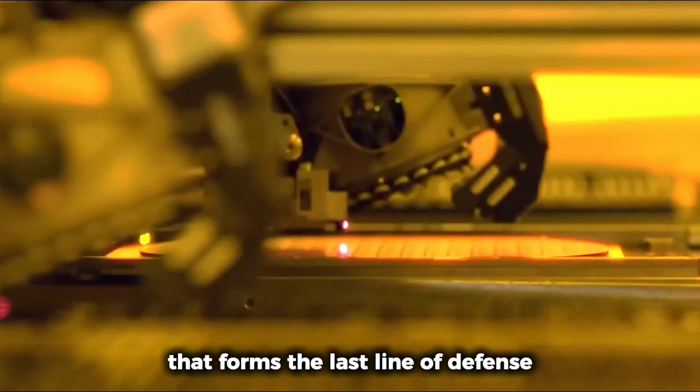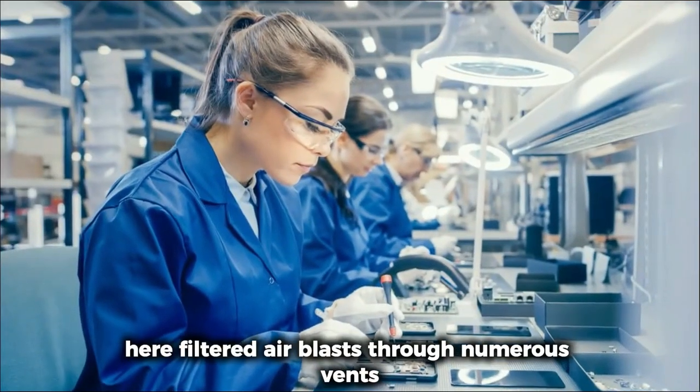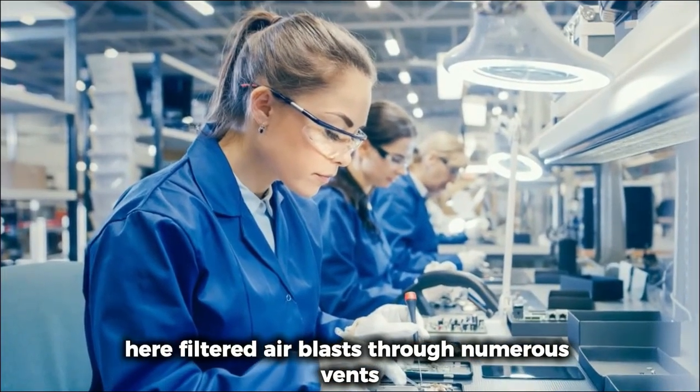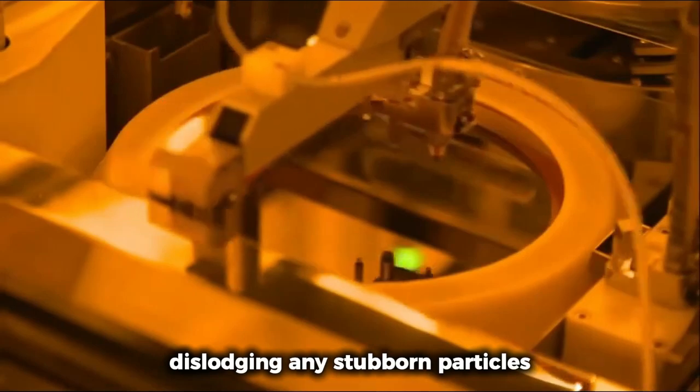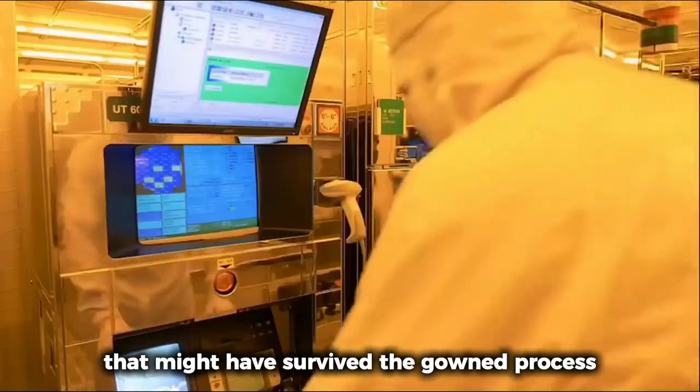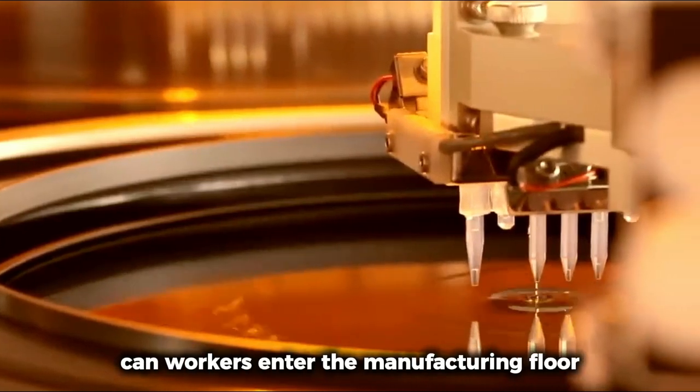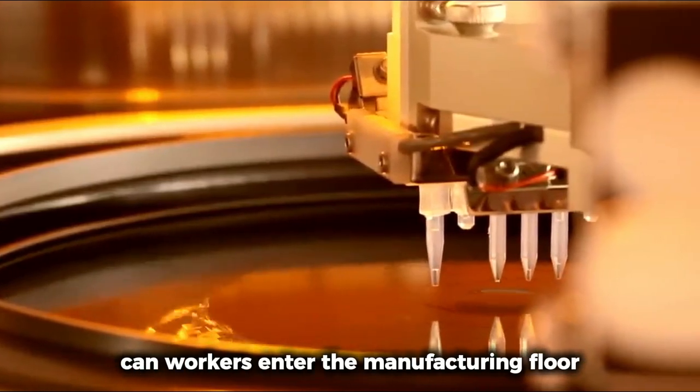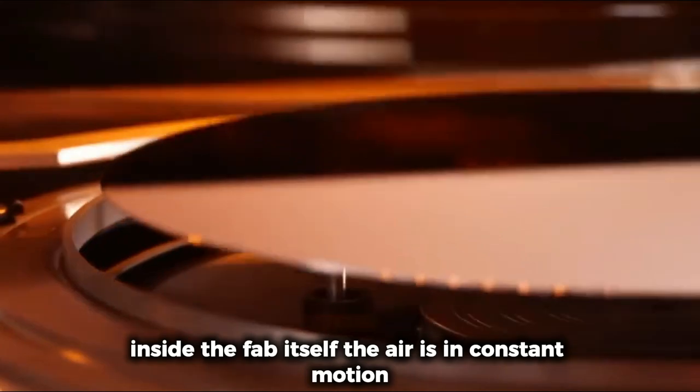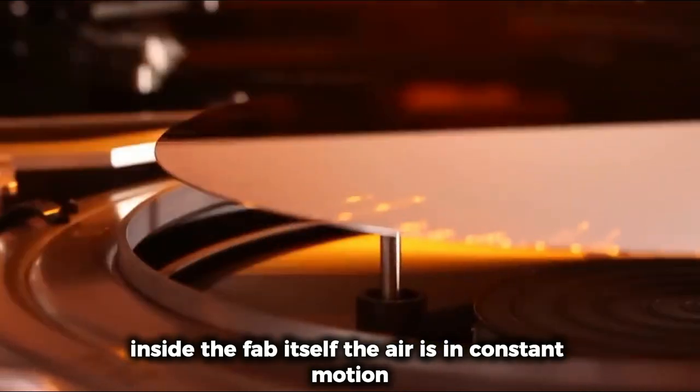Layer by layer, workers shield themselves—and more importantly, shield the clean room from themselves. Booties, hoods, gloves, face masks, and goggles create an impenetrable barrier against human-sourced contamination. The suit isn't to protect the worker; it's to protect the delicate wafers from the worker. Yet even fully suited, you're not ready to enter the fab. The final guardian between the outside world and the clean room is an air shower, a specialized chamber that forms the last line of defense. Here, filtered air blasts through numerous vents, dislodging any stubborn particles that might have survived the gowning process.